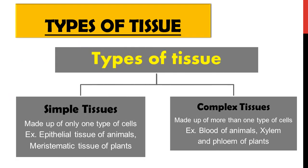Now let's see the types of tissue. There are two types: simple tissue and complex tissue. Simple tissues are made up of only one type of cell. Examples include epithelial tissues of animals — the upper layer cells like skin, which contain no blood — and meristematic tissues of plants, which are responsible for growth and cell division.